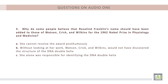Question number three: Why do some people believe that Rosalind Franklin's name should have been added to those of Watson, Crick, and Wilkins for the 1962 Nobel Prize in Physiology and Medicine? A. She cannot receive the award posthumously. B. Without looking at her work, Watson, Crick, and Wilkins would not have discovered the structure of the DNA double helix. C. She alone was responsible for identifying the DNA double helix.